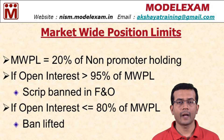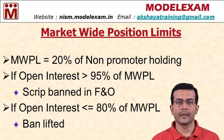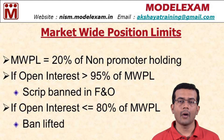Now, out of this market-wide position limit, if the open interest crosses 95% of that MWPL — that is the market-wide position limit — then that stock will be banned in derivatives.